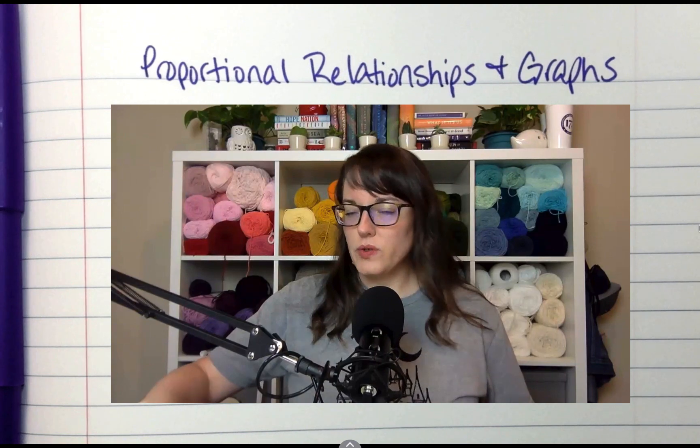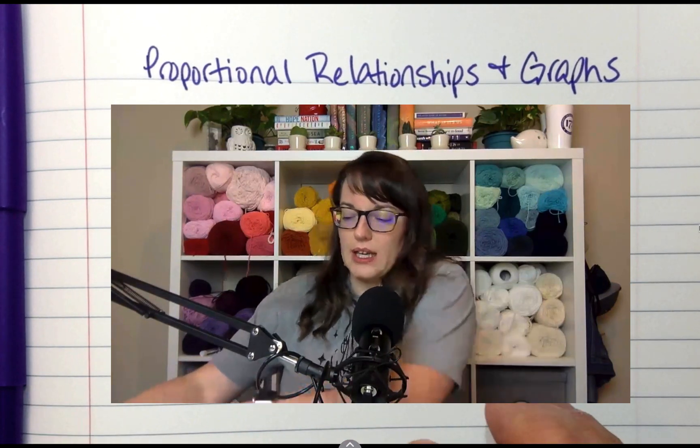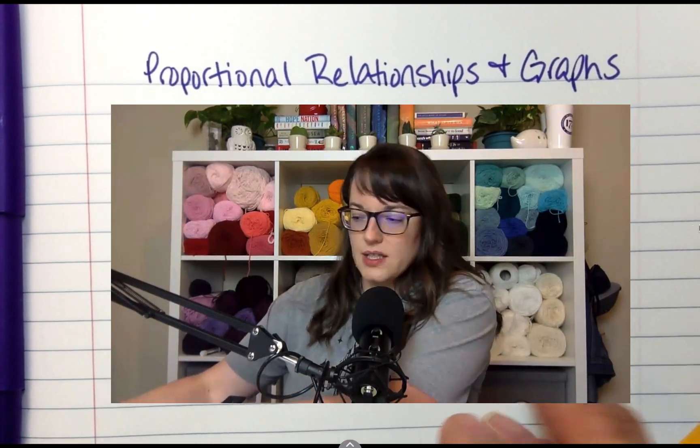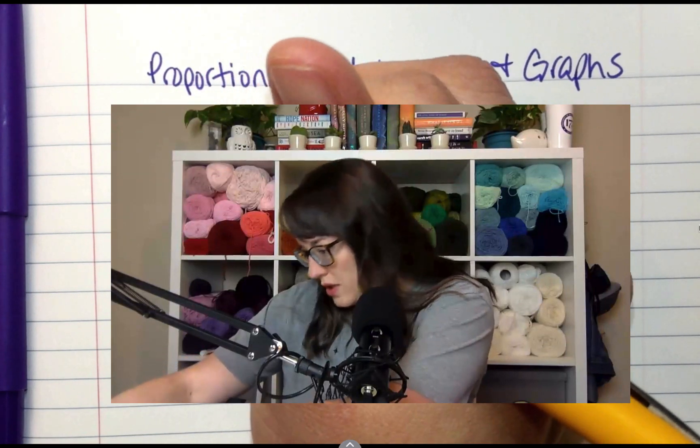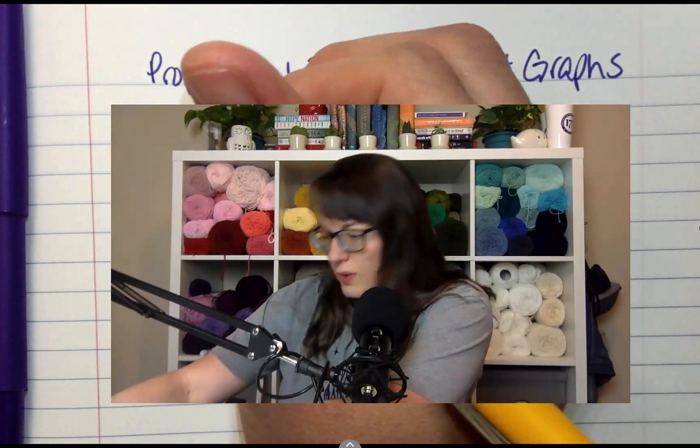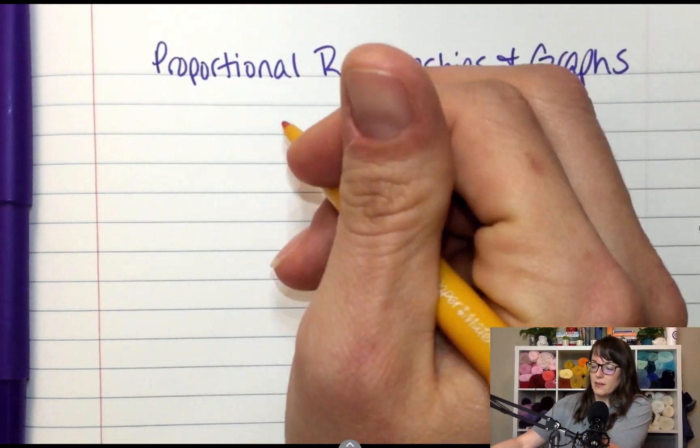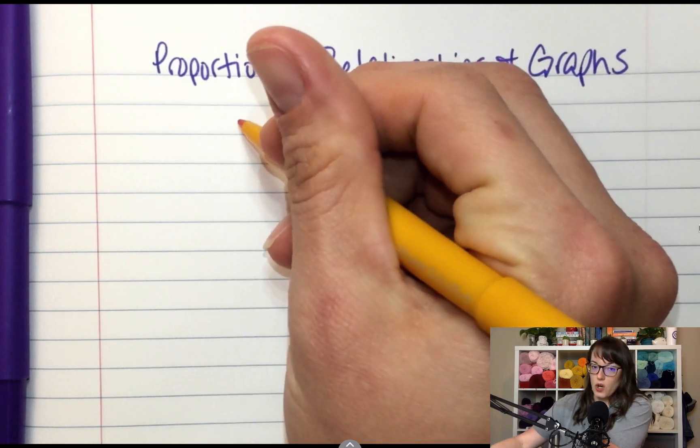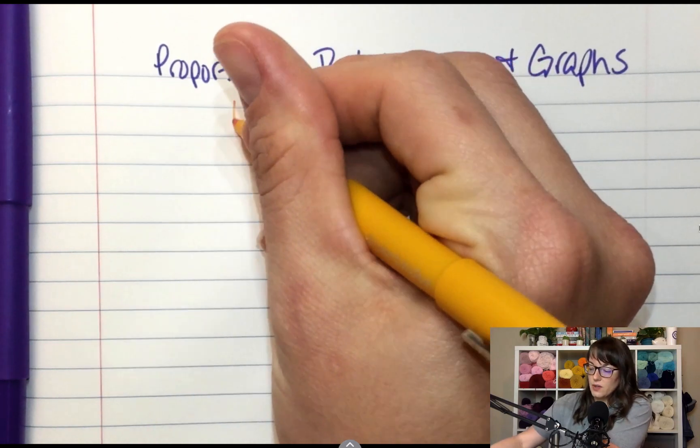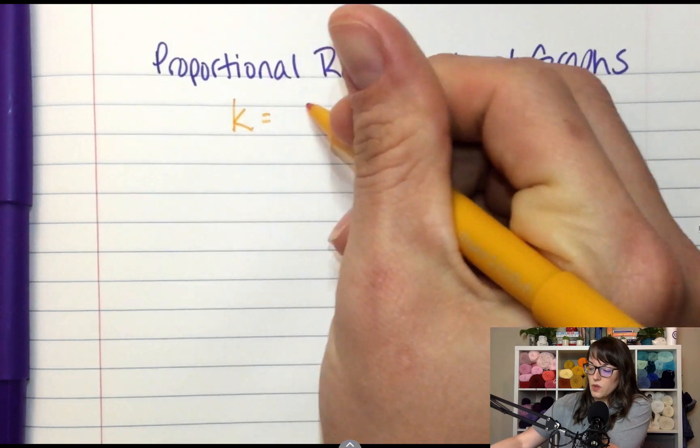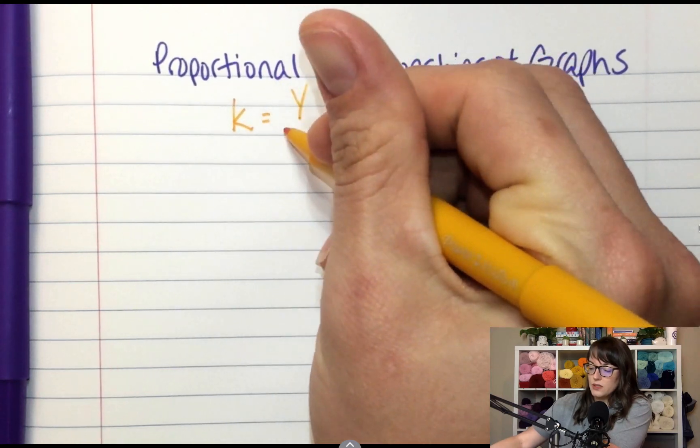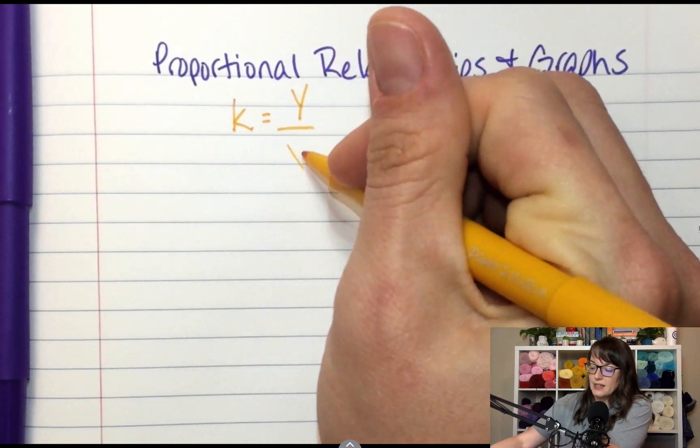So a proportional relationship is when there is a constant rate of change and we found that by doing y divided by x and we call that k. So k equals a y value divided by its x value.